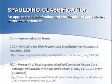Welcome to this introduction on the Spaulding Classification, an approach to disinfection and sterilization of patient care items and equipment. The information in this presentation is adapted from the Guideline for Disinfection and Sterilization in Healthcare Facilities published in 2008 by the Centers for Disease Control and Prevention, and the Processing, Reprocessing Medical Devices in Healthcare Settings, Validation Methods and Labeling, a draft guidance issued in May 2011 by the Food and Drug Administration. Please refer to the latest CDC or FDA guideline for definitions of terms or further questions.